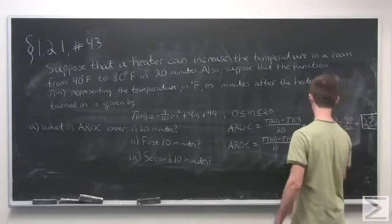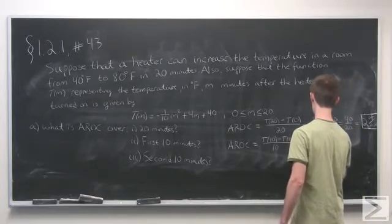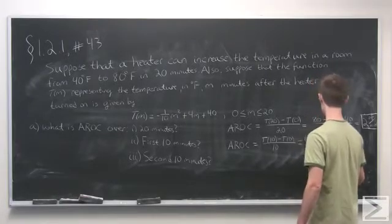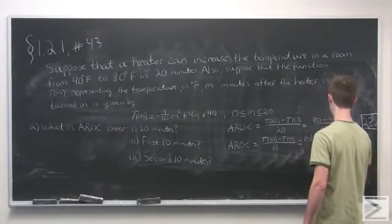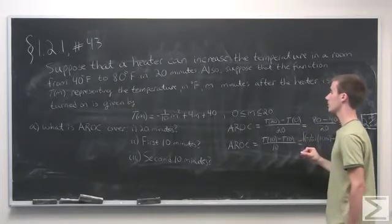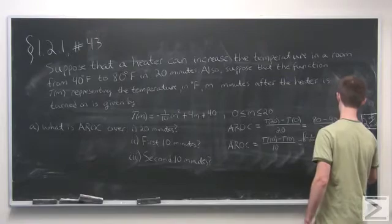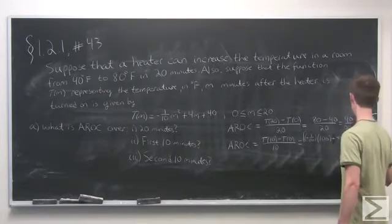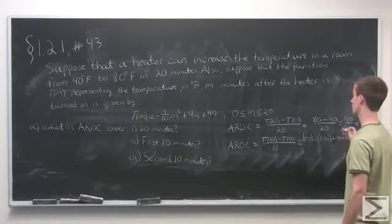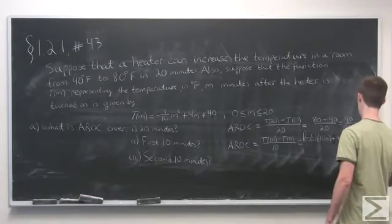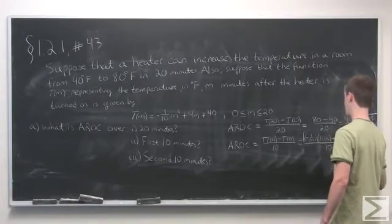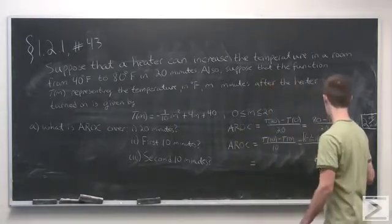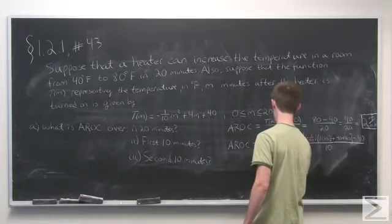T(10) equals -1/10 times 10², or 100, plus 4 times 10, or 40, plus 40, minus T(0), which is 40, all over 10. In the numerator,